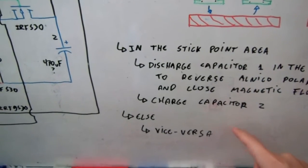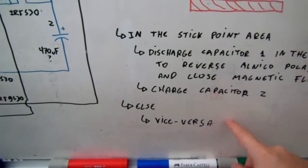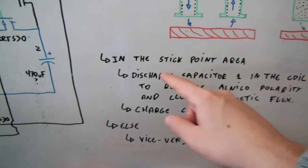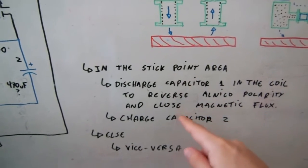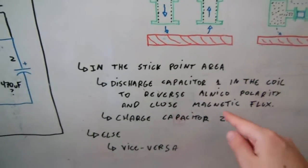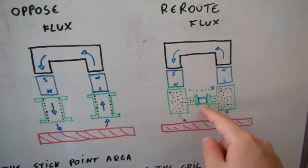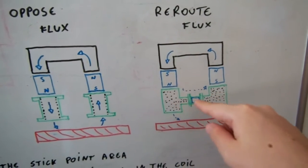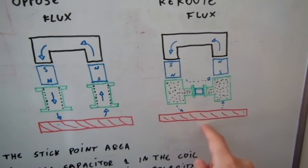And if I'm not in this stick point area, I'm gonna do the vice versa, which means I'm gonna charge capacitor one and discharge capacitor two in order to open the magnetic flux. So the polarity of this magnet will be reversed to open this flux so the magnetic flux will not go through here and will need to go through the rotor.